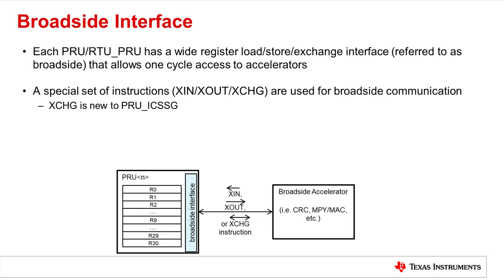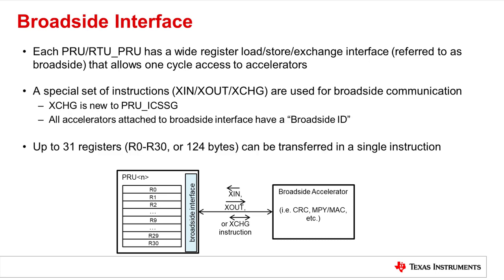The EXCHANGE instruction is new on PRU ICSSG compared to the previous generation PRU ICSS. Each accelerator is assigned one or more broadside or device IDs. This ID is a required argument or parameter for the XFIR instructions — it indicates to the broadside interface which accelerator the PRU core intends to communicate with. The broadside IDs associated with each accelerator can be found in your device technical reference manual, or TRM.